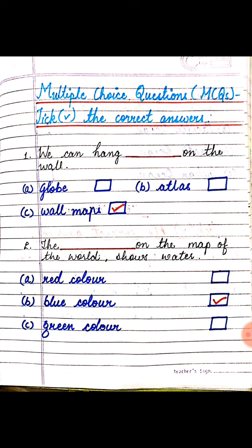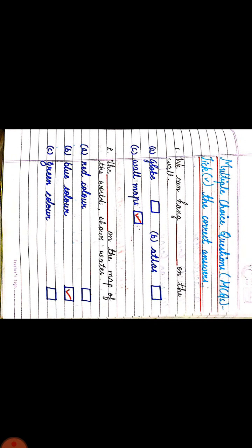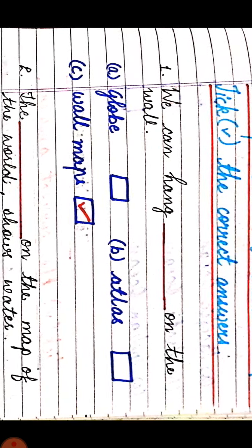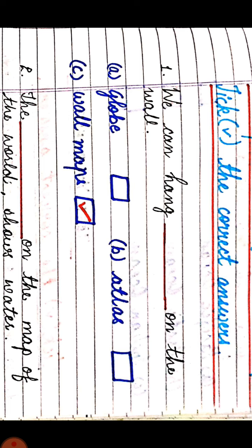The first one is: we can hang ___ on the wall. Students, can you please name the object which you can hang on the wall? The options are: globe, atlas, or wall maps. The answer is wall maps.